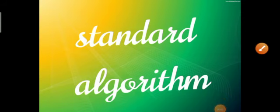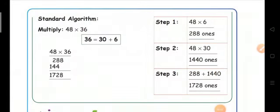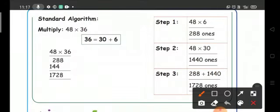Next, the standard algorithm. Multiply the same numbers, 48 times 36. First, see the multiplier 36, separate the numbers: 30 plus 6.